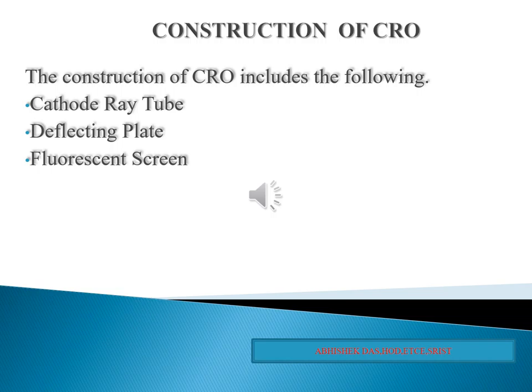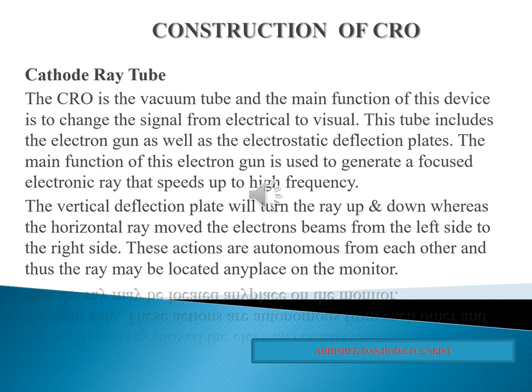Now we are going to discuss the construction of the CRO. The main components of the CRO are the electron gun or cathode ray tube, the deflection plate or deflection system, and the fluorescent screen. Initially, we need to know about the electron gun or cathode ray tube. This part of the CRT emits electrons, transforms them into a narrow beam, and focuses the beam on the fluorescent screen.